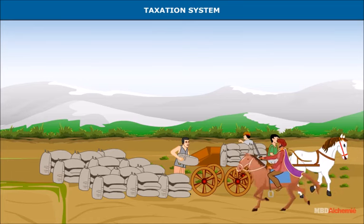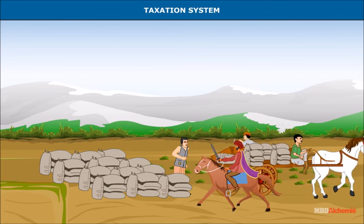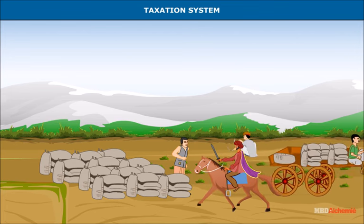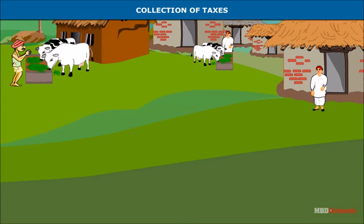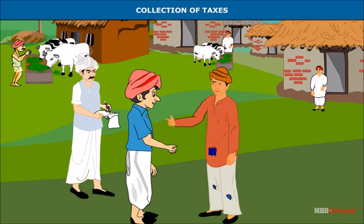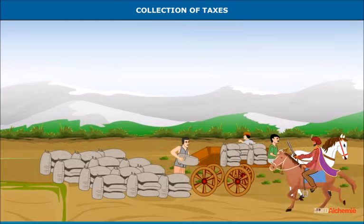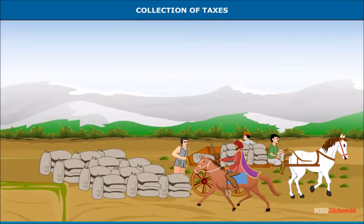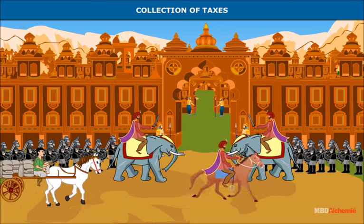Taxation system: The king ruled with the help of a number of paid officers. To make their payments he needed taxes, so all producers of goods paid a tax to the king. In the beginning they paid taxes in the form of goods they produced; peasants paid one-sixth (bhaga) of their produce. The king had a group of officers known as tax collectors who visited every village, measured the land, noted the amount of grain produced, and collected the tax in the form of money or goods — that is, in cash or kind. Even hunters had to provide forest produce to the king.